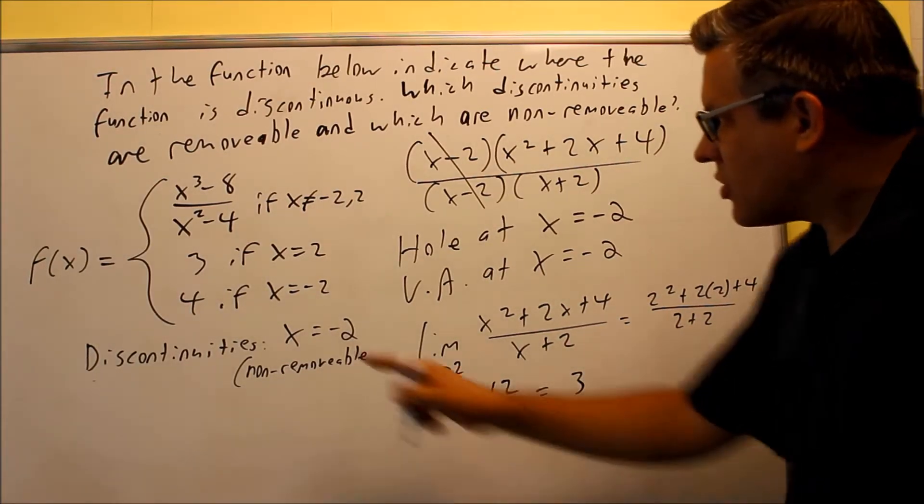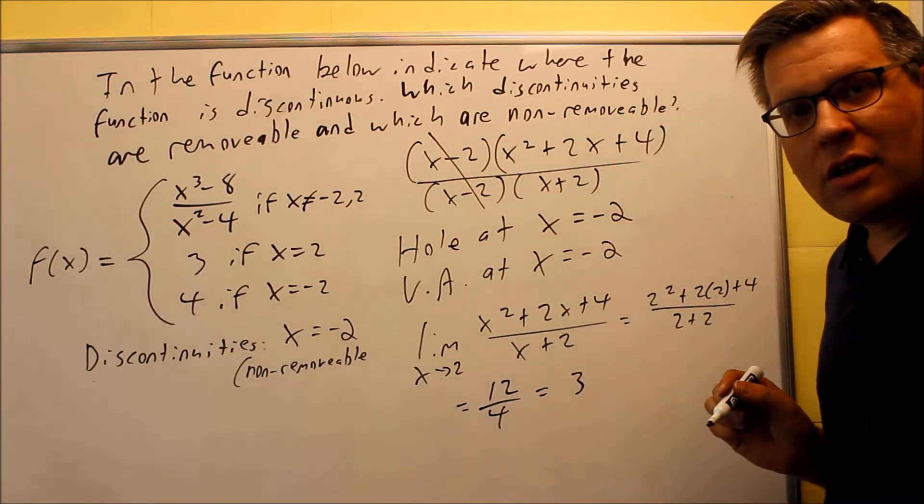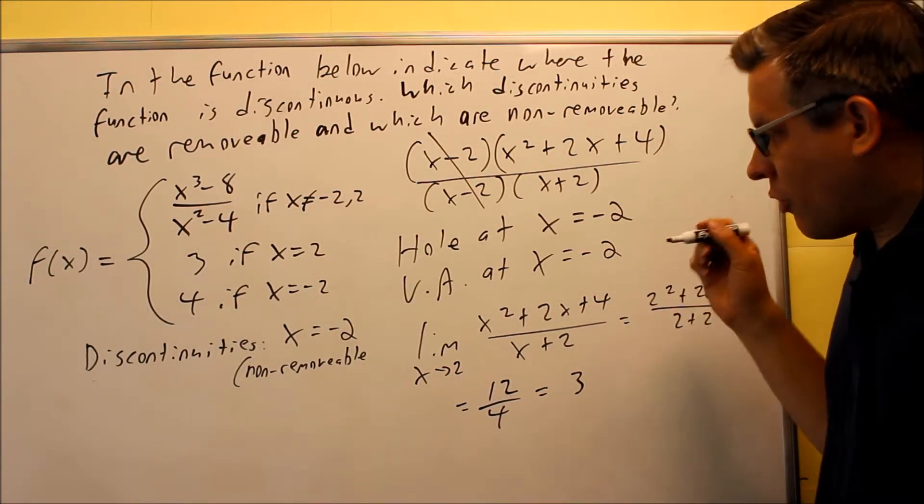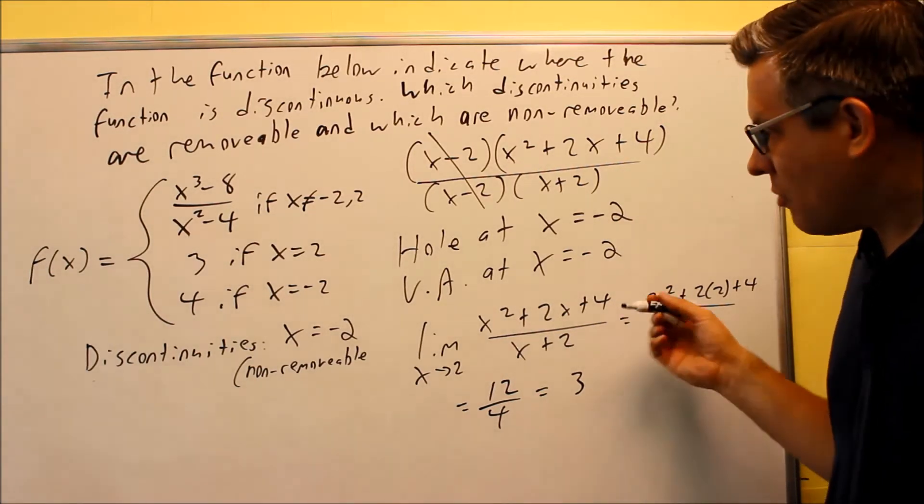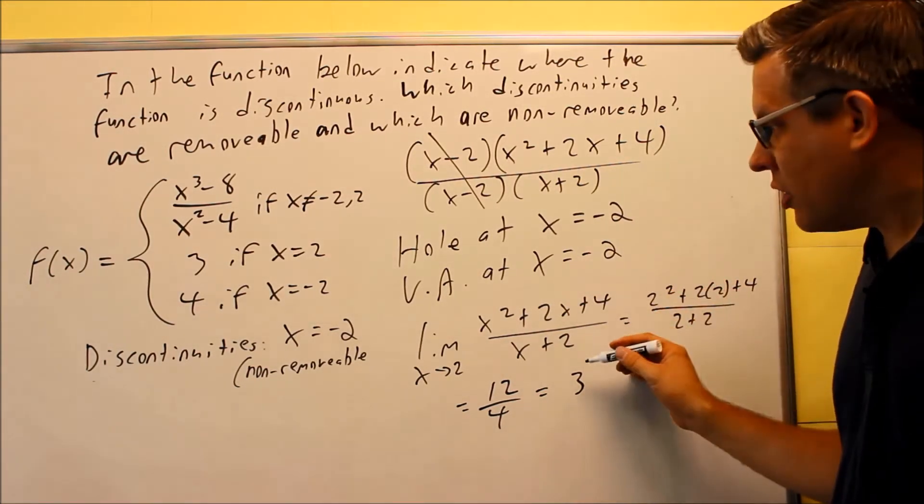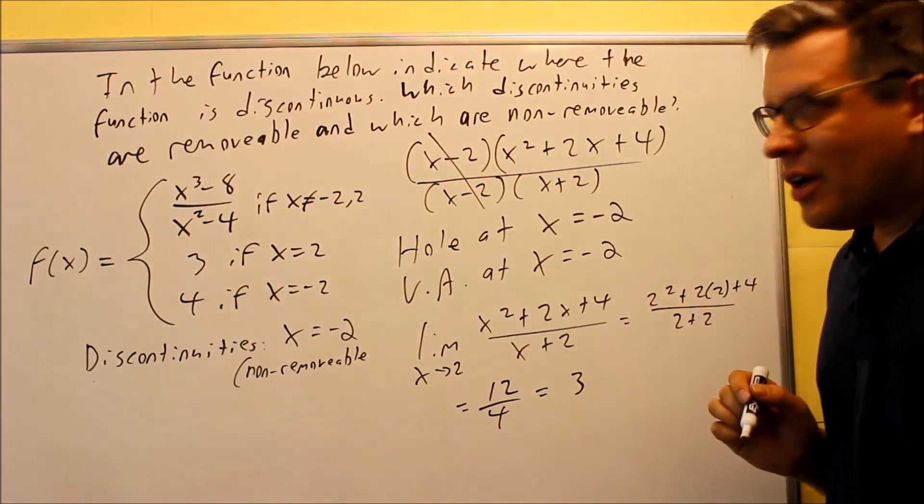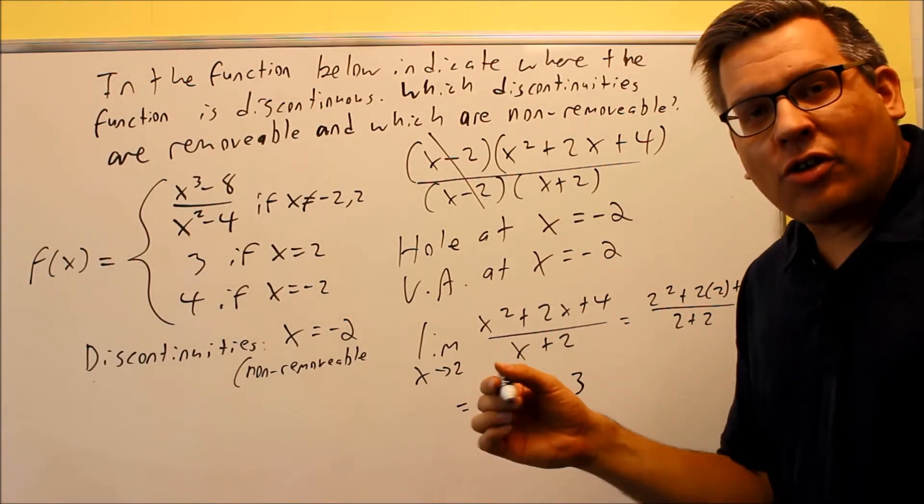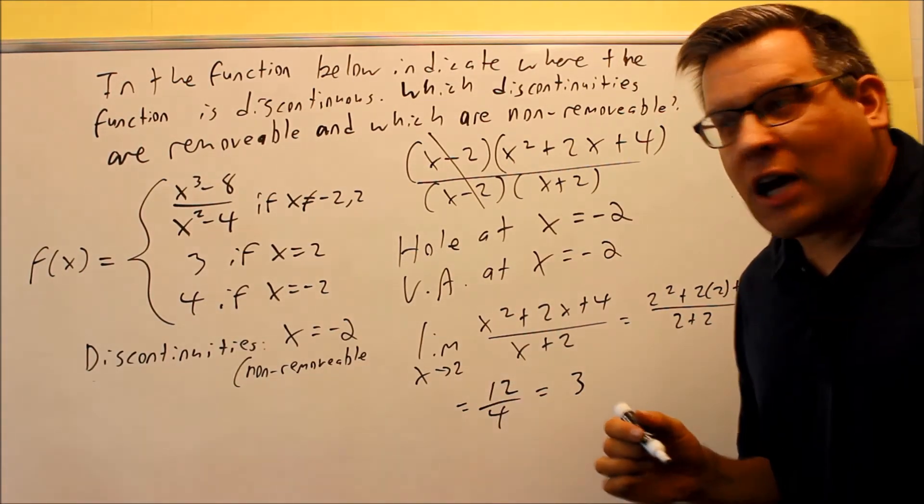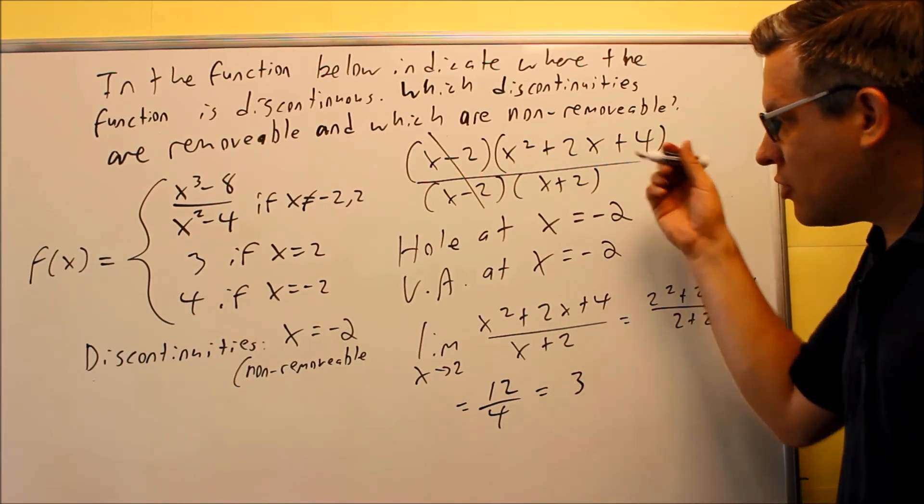Now this matches the value that you have over there, both of these are equal to 3. So because of that, we can say that the graph is still going to be continuous. The hole is actually going to be plugged up at that point because the limit from both sides equals 3. We're filling in with a 3, so therefore it's going to be continuous. In the notes for this section, I actually showed the graph and you can see graphically how you would do that, but I wanted to show you that it is possible that you can do these problems also algebraically.